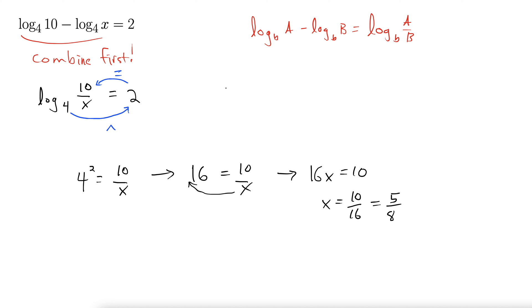We give it a quick check to make sure that doesn't force us into a negative inside the log. We cannot have a negative inside the log. The domain of log is 0 to infinity. If we get a negative, we have to toss out that result. Luckily, this does not give us a negative, so we are good to go. 5 eighths is the answer.